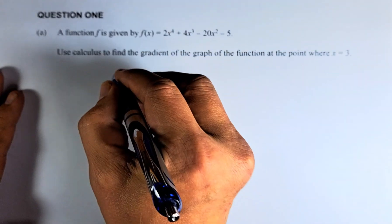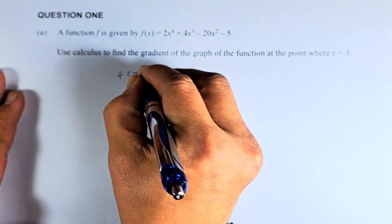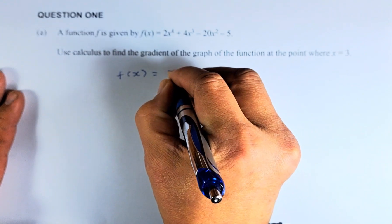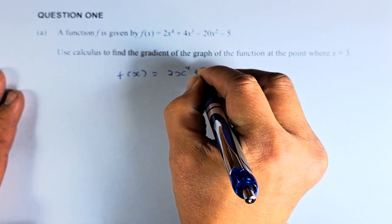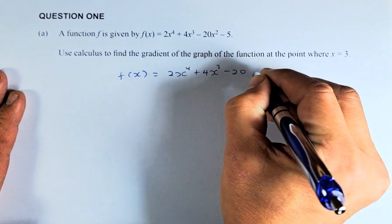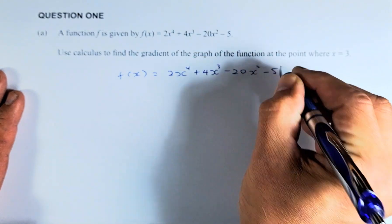So we're going to write the equation. f(x) equals 2x to the power of 4 plus 4x cubed minus 20x squared minus 5.